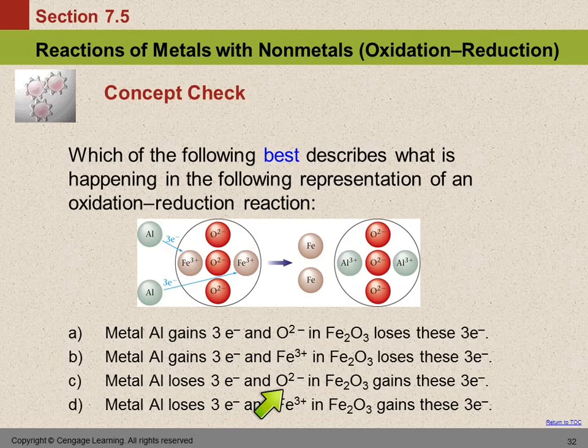Is it the O2- that gains the electrons, or is it the iron 3+? Well, the O2- remains O2-. It didn't gain or lose electrons. It stayed the same. The iron gained the electrons and became neutral. So the correct choice is D.